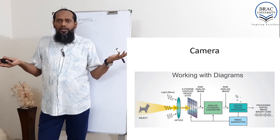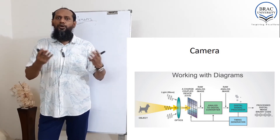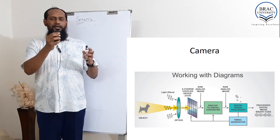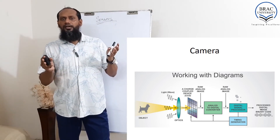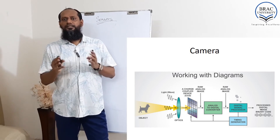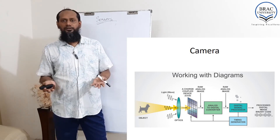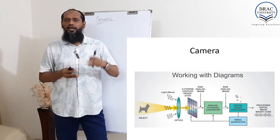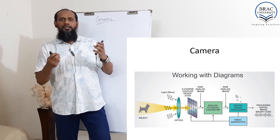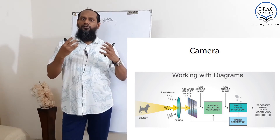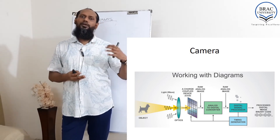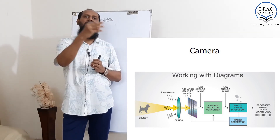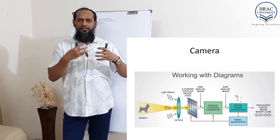Our digital system cannot directly read the electrical signal, so we need an ADC — analog to digital converter. After the ADC, the digital signal goes to the DSP — digital signal processing unit, which is essentially a computer. It processes the image according to requirements: auto-focus, making a face clear, blurring the background, or embedding the date and time inside the picture. These kinds of operations are called digital signal processing.